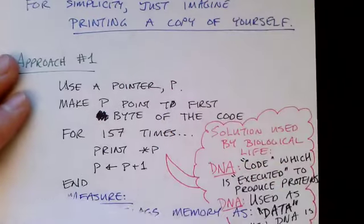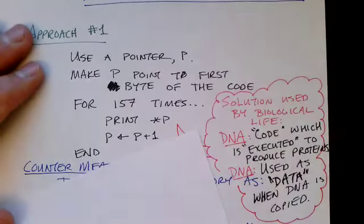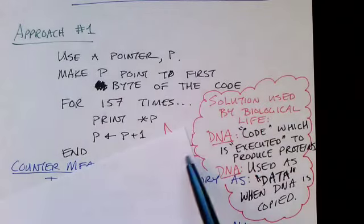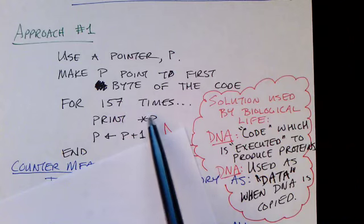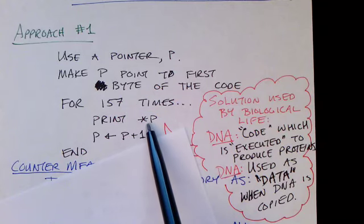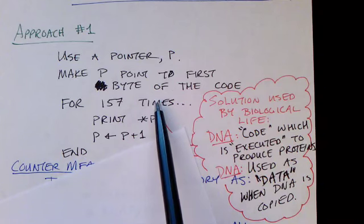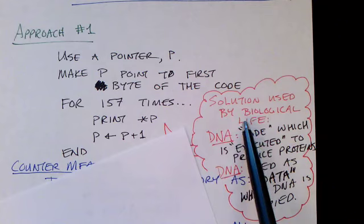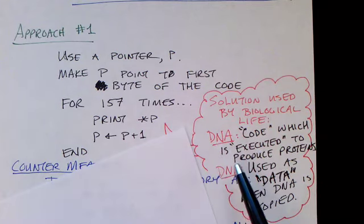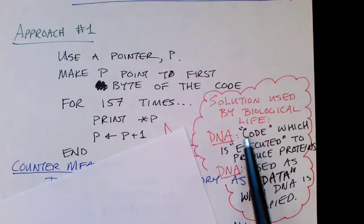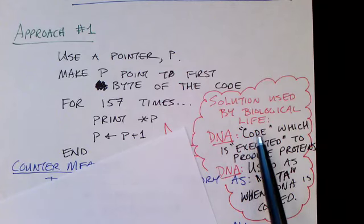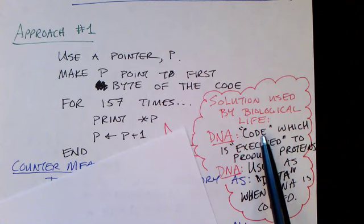And I should say this is, in a sense, the solution that biology ends up using. As you can see in this program, you've got memory that's being used two ways. In one way it's being used as data. We go out to a particular byte in memory and fetch that data, and then print it. But it's also being used in a second way, which is it's being executed. And in biological life, we've got DNA. DNA is also used two different ways.